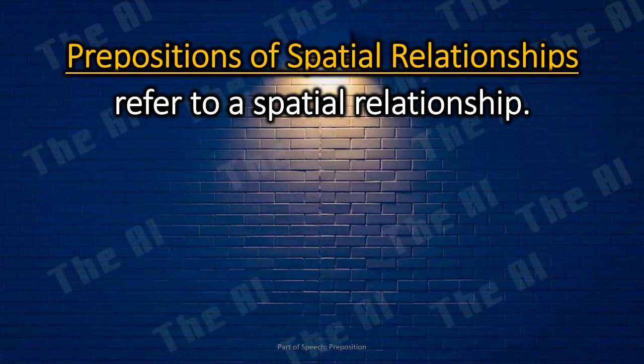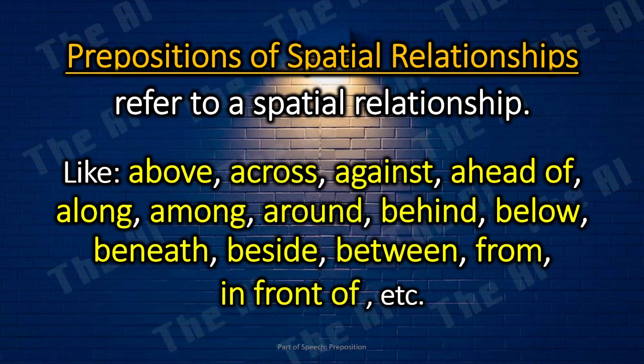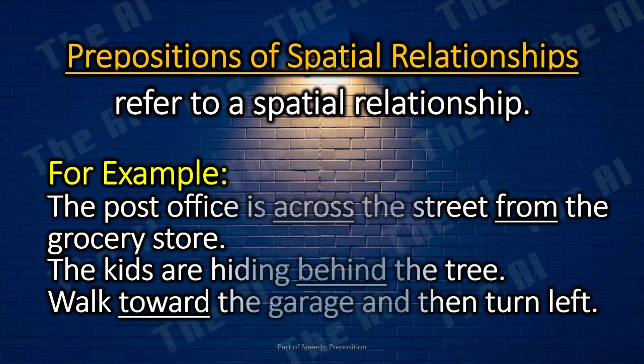Prepositions of spatial relationships. The prepositions of spatial relationships refer to a spatial relationship, like above, across, against, ahead of, along, among, around, behind, below, beneath, beside, between, from, in front of, etc. For example: The post office is across the street from the grocery store. The kids are hiding behind the tree. Walk toward the garage and then turn left.